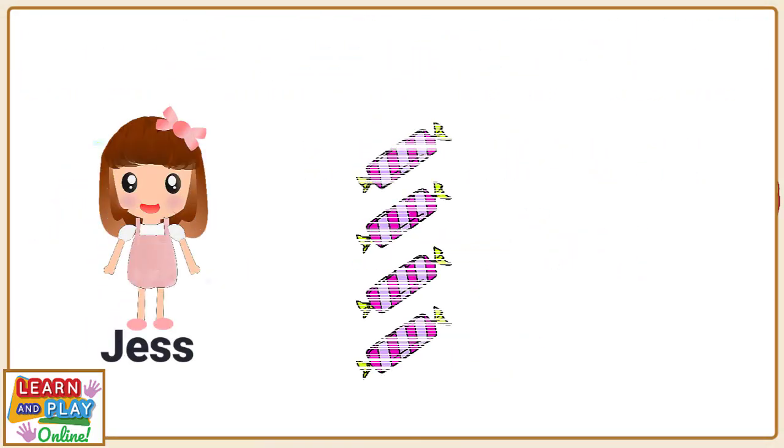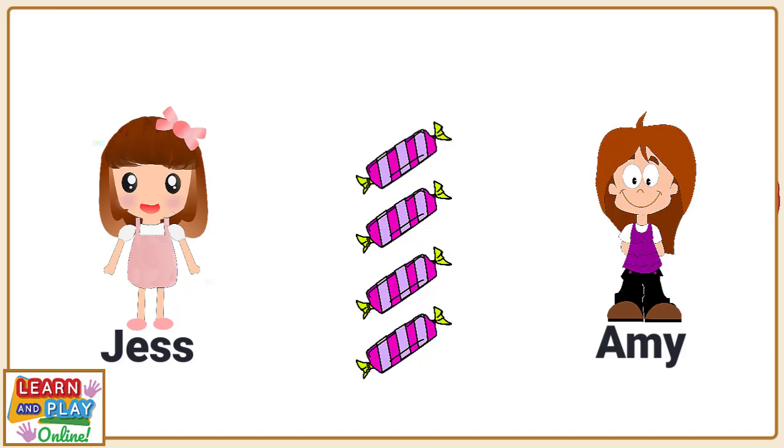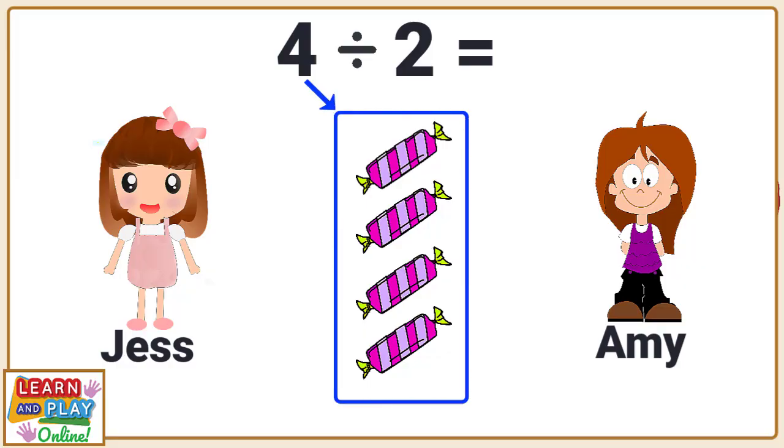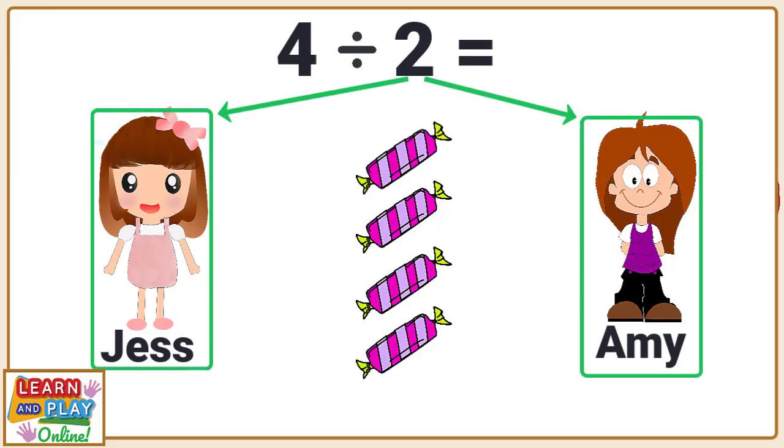This is Jess. She has four candies and she is going to share them with her friend Amy. The number sentence for this problem is four divided by two. The number four represents the number of candies there are to be shared. The number two tells you how many people the candies are being shared amongst.